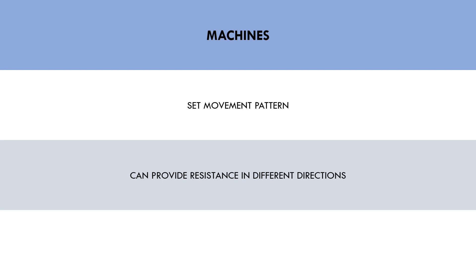Depending on how the machine is built, resistance can be provided in horizontal, vertical, or diagonal directions, and in straight lines or arcs, and resistance can vary throughout the range of motion. Some examples of machine-based exercises include the chest press machine, leg press, shoulder press, and hamstring curl.